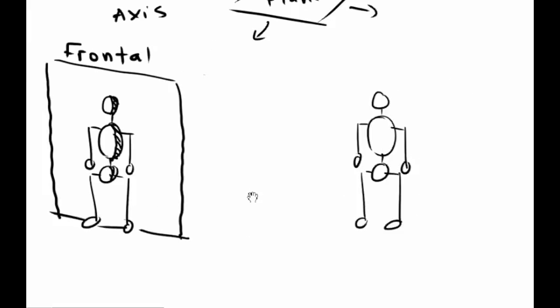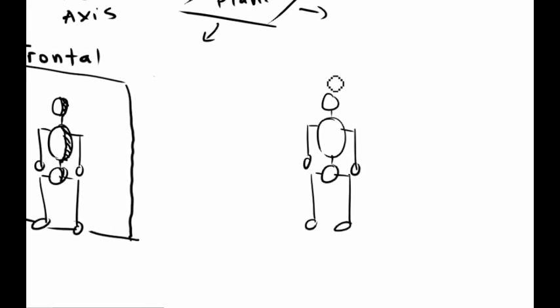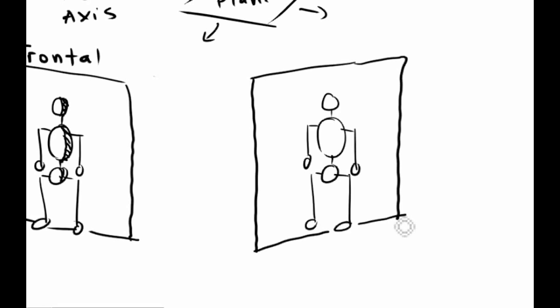Then we have the sagittal plane, which divides the body into a left and right part. So we're imagining that the right side of the body is kind of behind the plane here. That's the sagittal plane.